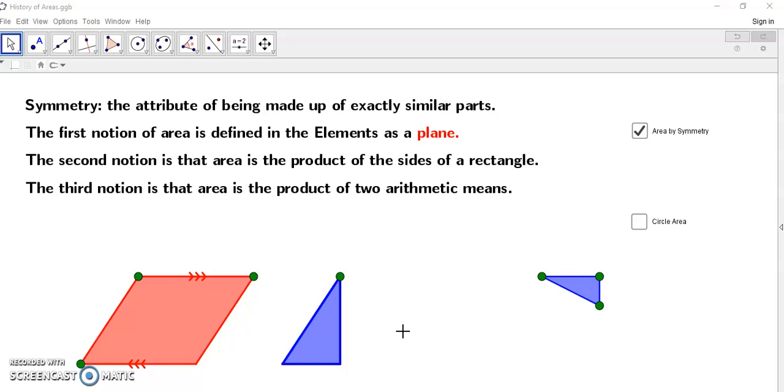So the first notion is defined in the elements as a plane. In other words if we look if we take a circle which is already derived in one of the five requirements